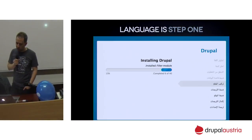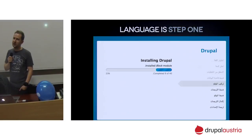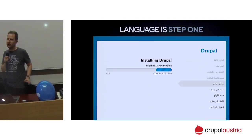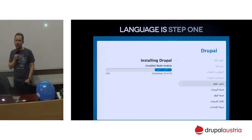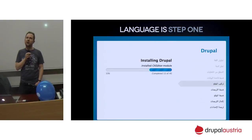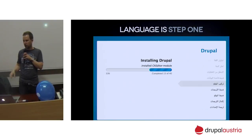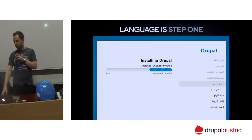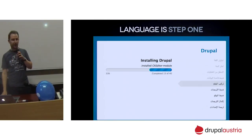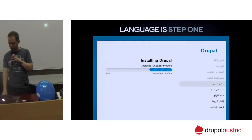We download translations live over the internet. So if you don't have an internet connection when you test, it's not going to work — it will tell you it cannot download the translation at the time, and you can pick a different language or download the translation later.